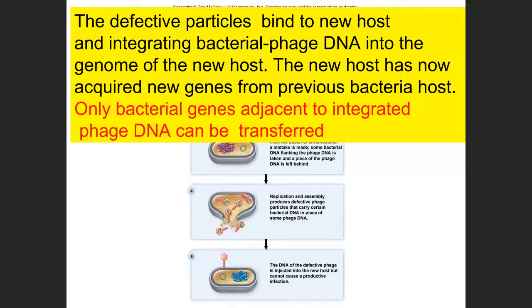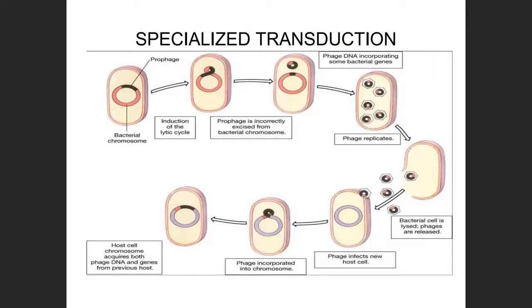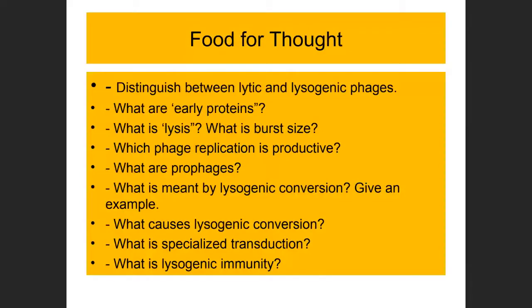The two key differences between generalized and specialized transduction: in generalized transduction only one random viral particle out of ~200 carries the host gene, and any gene can be transferred. In specialized transduction, every viral particle produced carries the host gene, but only genes adjacent to the prophage insertion site are transferred.